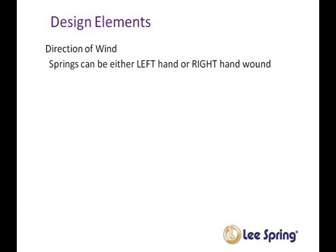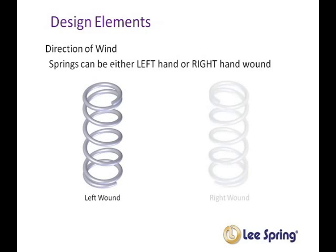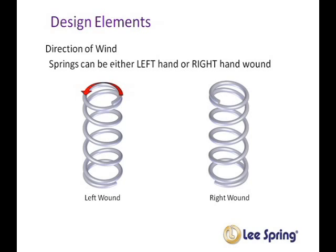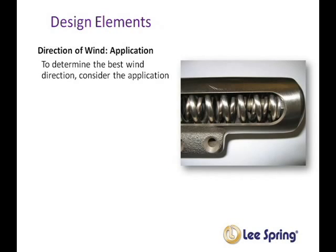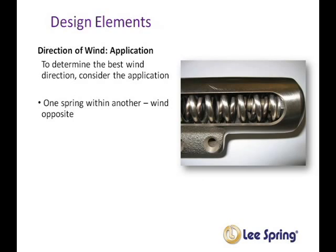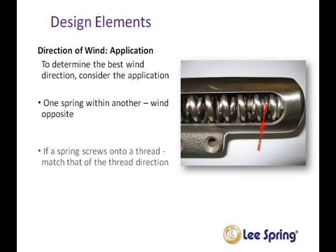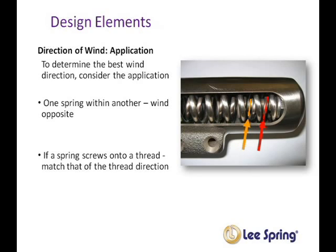One primary design element is the direction of wind. A coil spring can be wound in either a left hand or right hand direction, similar to a screw type thread. A left hand wound spring will spiral in the same direction as a left hand threaded screw; a right hand wound spring will spiral in the same direction as a right hand threaded screw. Direction of spring wind can be important depending on how the spring is used. For example, when you have one spring working inside of another, the wind of the inner spring and the outer spring should be in opposite directions to keep the springs from binding. If a spring screws into a threaded component, match the direction of wind to the direction of threads.